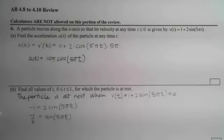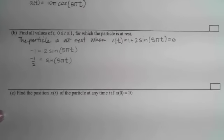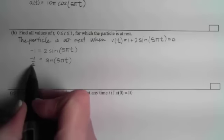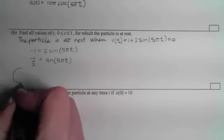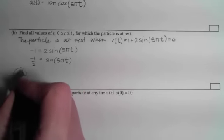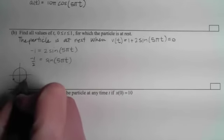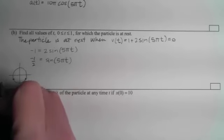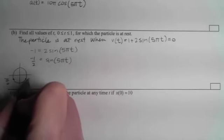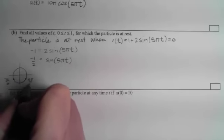We need to think about our unit circle. On the unit circle we want the y coordinate which is representative of the sine to be negative one half. That will happen here and here. This one is at 7π/6 and this one is at 11π/6.